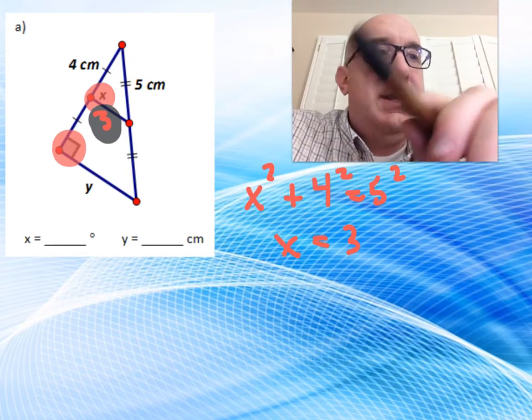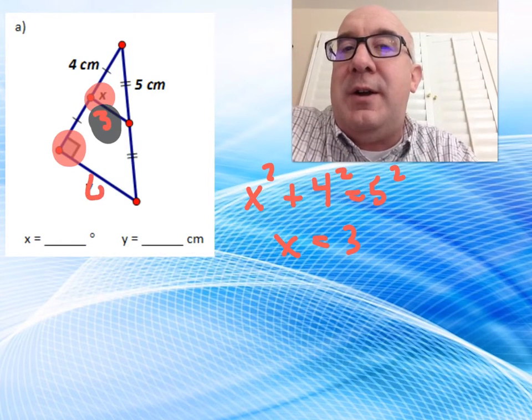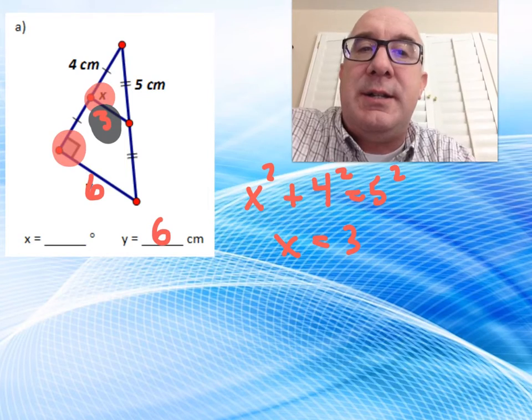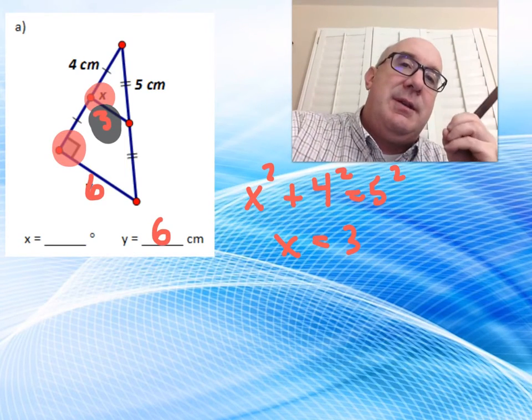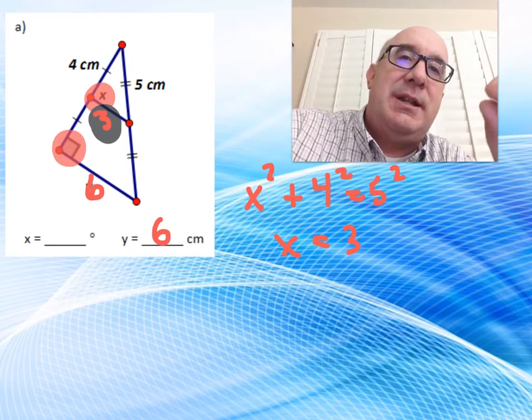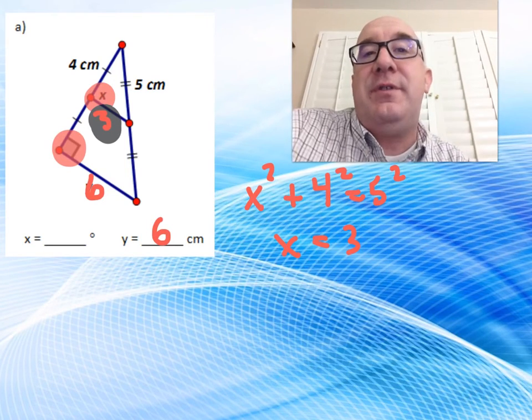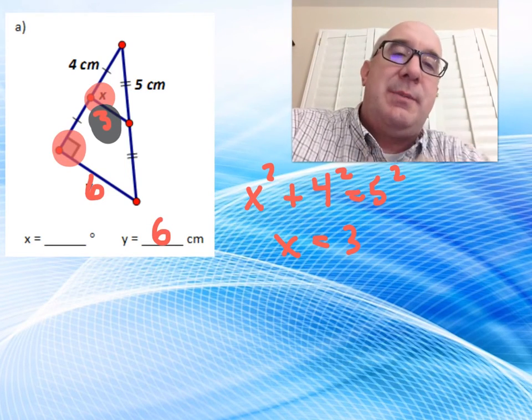And then from there it's pretty easy. If that's 3, then the Y value's got to be the 6. Because, again, there's a midpoint, mid-segment relationship is that the mid-segment is half of the other, or if you double the mid-segment, you get that.